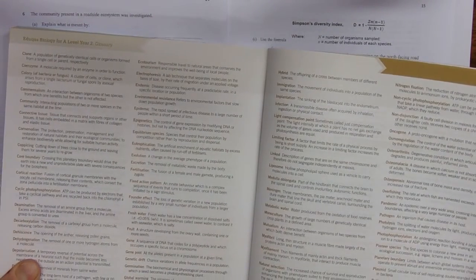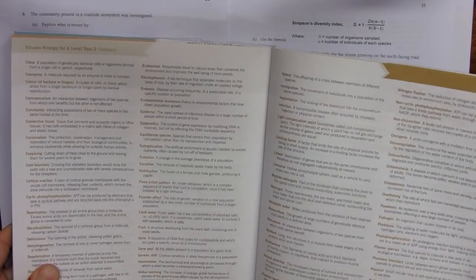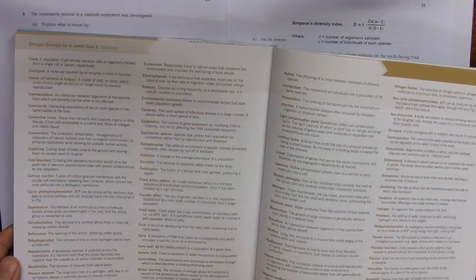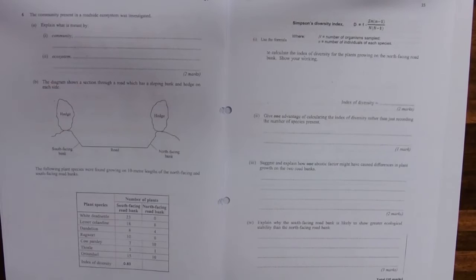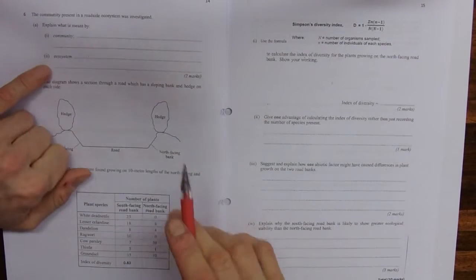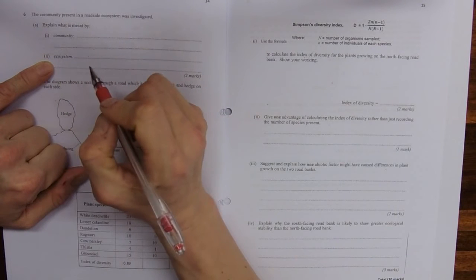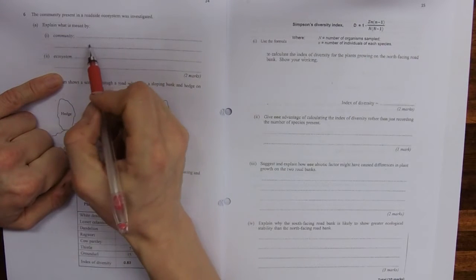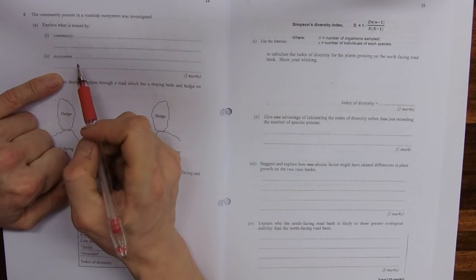You've got a glossary in the back of your textbook and these are in your notes as well. Community, ecosystem, along with lots of other words. Make sure you know the technical meaning of words because they do crop up like this. So a community is all the organisms in an area or an ecosystem or an environment. So population is just one species, community is all of the species.